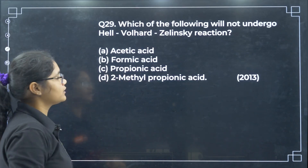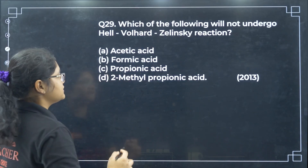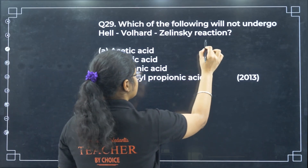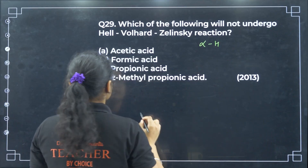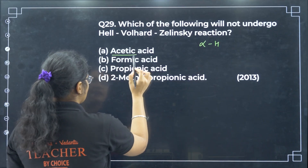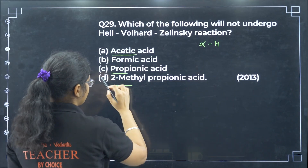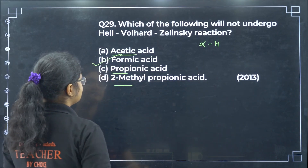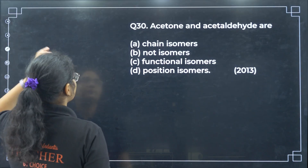Which of the following will not undergo HVZ reaction? For HVZ reaction we need alpha hydrogen. Acetic acid has alpha hydrogen, propanoic acid has 2, but formic acid does not have alpha hydrogen — so option B.